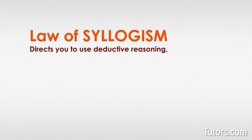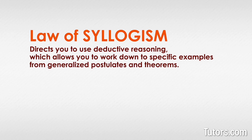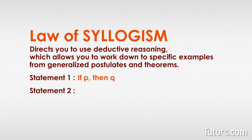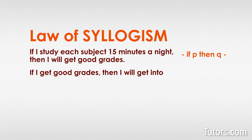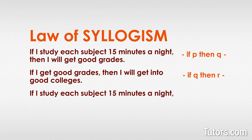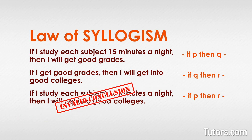The law of syllogism directs you to use deductive reasoning, which allows you to work down to specific examples from generalized postulates and theorems. Logicians usually assign letters: statement one, if p then q; statement two, if q then r; statement three, if p then r. For example: if I study each subject 15 minutes a night, then I will get good grades (if p then q); if I get good grades, then I will get into good colleges (if p then r). Your premises must be related to ensure a valid conclusion — if your minor premise had been completely unrelated to your major premise, then no valid conclusion can emerge.